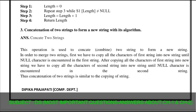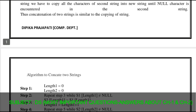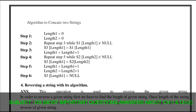Question number three: concatenation of two strings to form a new string with its algorithm. We have two different strings and these two strings are concatenated to make one new string. This operation is used to combine two strings to make one new string. To merge two strings, first we copy all characters from the first string into the new string until the null character is encountered, and then copy all characters from the second string into the new string until the null character is encountered in the second string. You have to follow the algorithm steps for concatenation of strings.